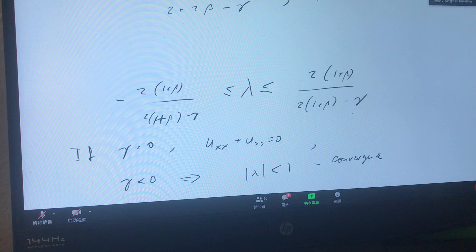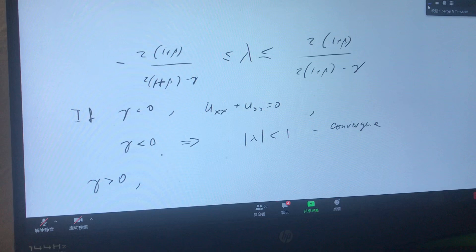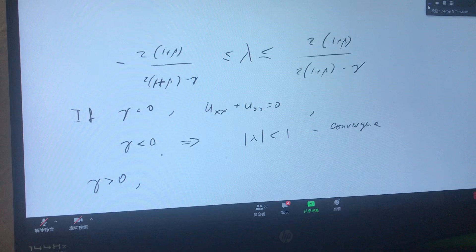What happens when gamma is positive? Well, first of all, let's recall what gamma was. Gamma was A times delta x squared. In practical calculations, of course, you will want delta x to be very small, otherwise your finite difference scheme is not approximating the differential equation.